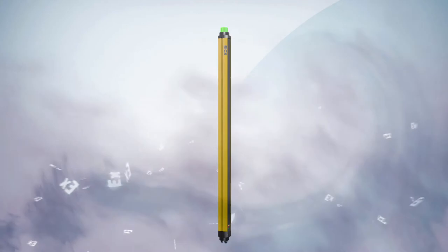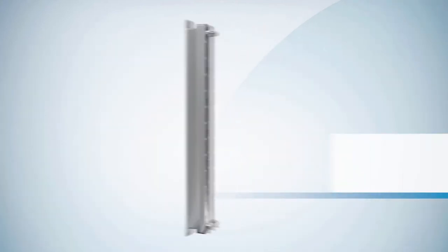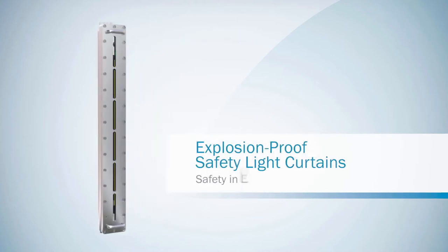Properly safeguarding machines in explosive environments can be a difficult task. A simple spark can trigger an explosion. That's why unprotected electrical devices such as a standard safety light curtain are prohibited. Introducing explosion-proof safety light curtains from SICK.